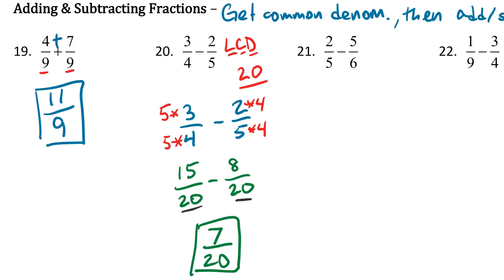So for 21, same thing. We're going to start off by looking for the LCD. So 5 and 6, the LCD in this case, would be 30. So how do I change a 5 into a 30? Well, I can just multiply it by 6. And again, make sure I do it to the top as well. So that's going to get a 6 times 2 is 12. 6 times 5 is 30. Then how do I change a 6 into a 30? Well, multiply it by 5. So if we bring that down, 5 times 5 is 25. 6 times 5 is 30. And there is subtraction in between them.